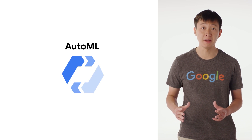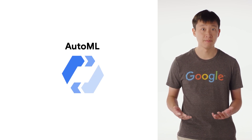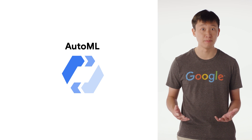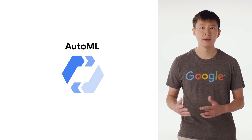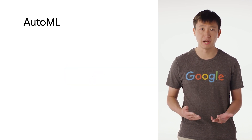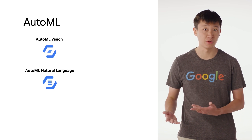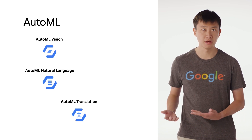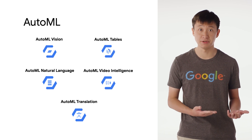But what if you want to train a machine learning model using your own custom dataset? This is where AutoML comes into play. With AutoML, you provide training data and Google Cloud builds a machine learning model for you that comes with a prediction endpoint. There are several different AutoML products, including AutoML Vision, AutoML Natural Language, AutoML Translation, AutoML Video Intelligence, and AutoML Tables.